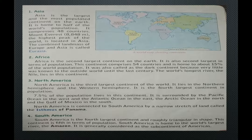North America is the third largest continent of the world. It lies in the Northern Hemisphere and the Western Hemisphere, and is the fourth largest continent in terms of population, with 7.5% of the world's population. It is surrounded by the Pacific Ocean in the west, the Atlantic Ocean in the east, the Arctic Ocean in the north, and the Gulf of Mexico in the south. North America is connected to South America by a narrow stretch of land called the Isthmus of Panama.